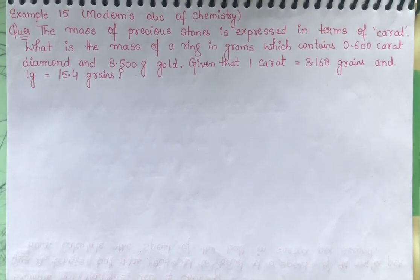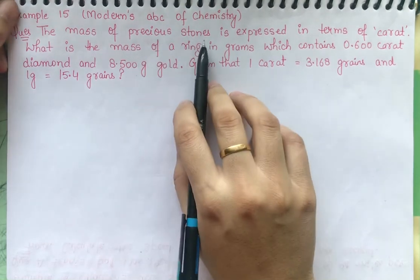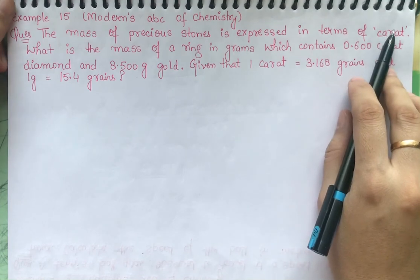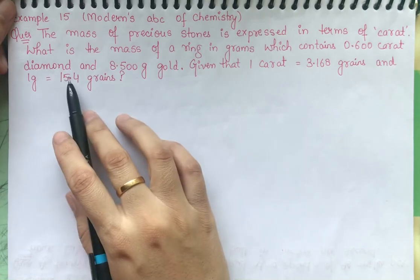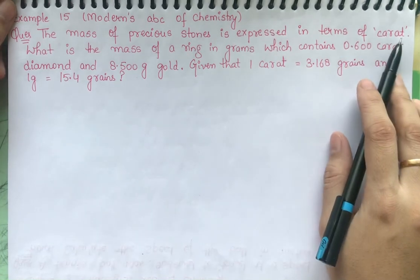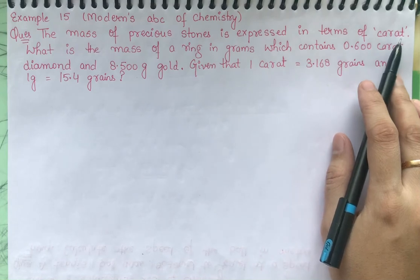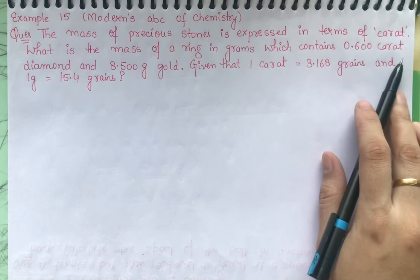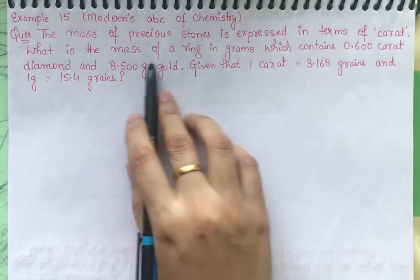There is one more example. The mass of a precious stone is expressed in terms of carat. If you have any diamond or precious stones, the mass is normally given in carat. As we talk about diamonds — this is a 12 carat diamond, or this is a 0.600 carat diamond. What is the mass of a ring in grams?